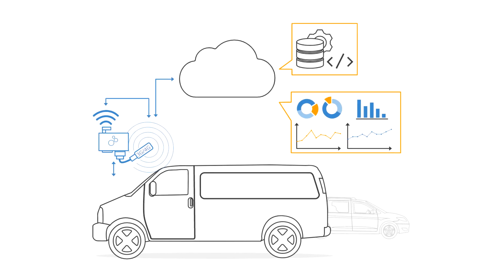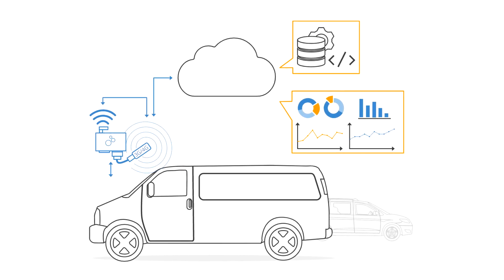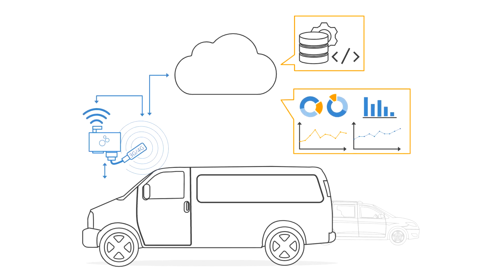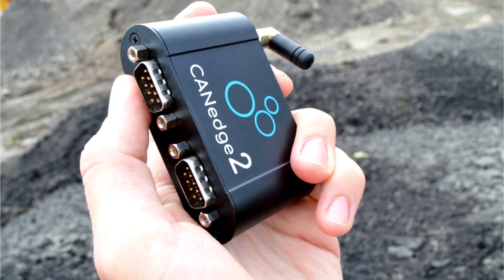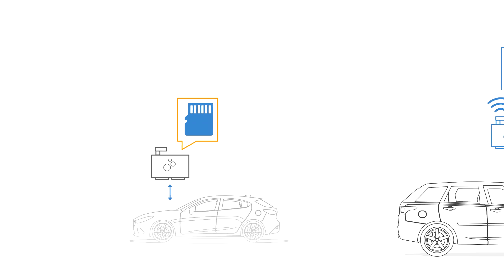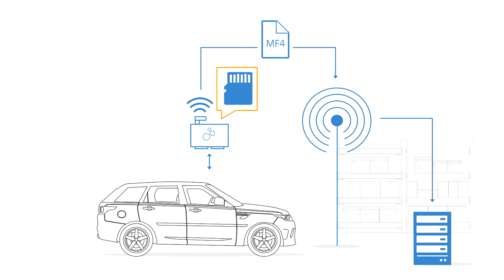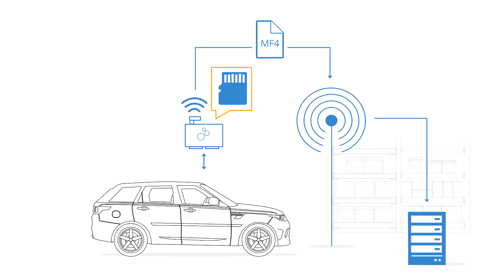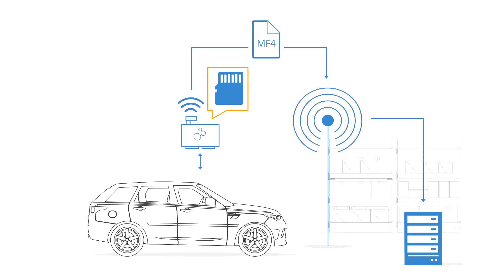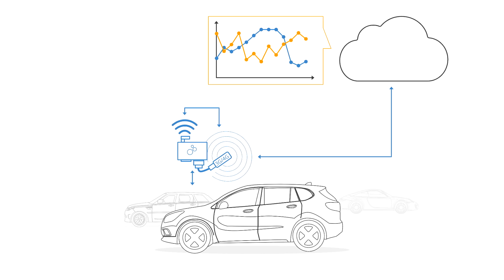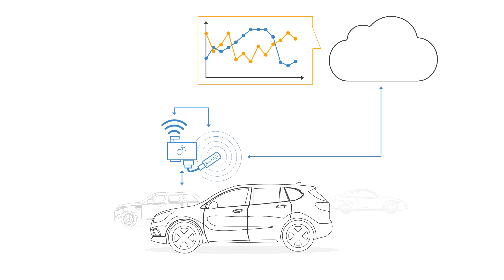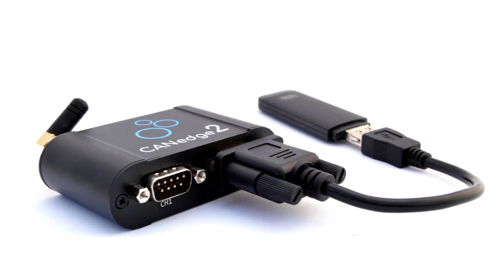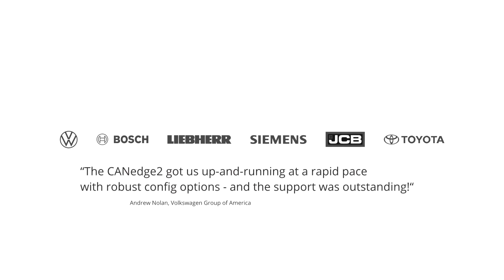In other use cases, remote and automated OBD2 data collection is required — for example, in car fleet telematics. The CAN Edge 2 lets you easily log data to an SD card and auto-push it via a Wi-Fi access point to your own server. The Wi-Fi can be a router in a garage or a 3G, 4G, USB hotspot powered by the car or the CAN Edge 2 second port.